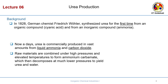For background: urea has been known for about 200 years. In 1828, the German chemist Friedrich Wöhler synthesized urea for the first time from an organic compound — cyanic acid (HCNO) — combined with an inorganic compound, ammonia. Cyanic acid and ammonia are mixed and they form urea. Nowadays this process is not commercially useful; urea is now produced in vast amounts from liquid ammonia and carbon dioxide.